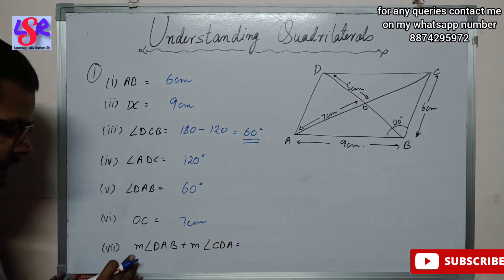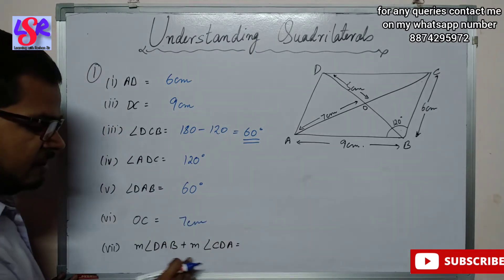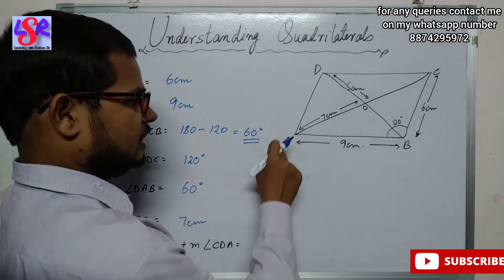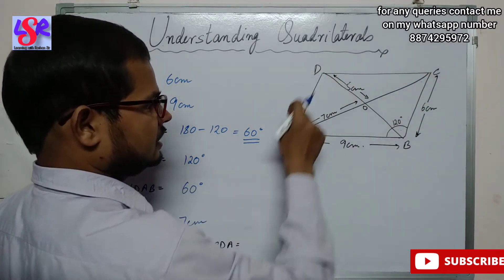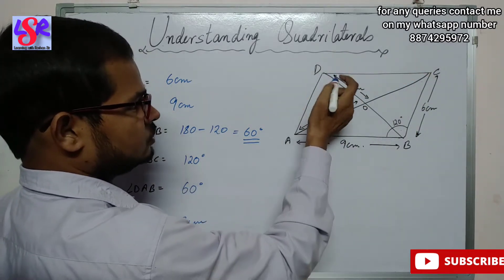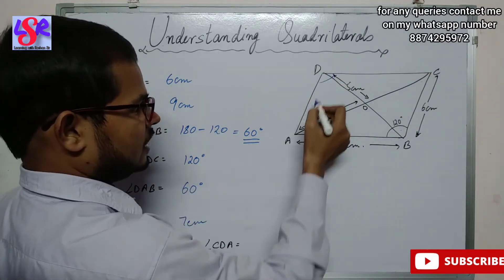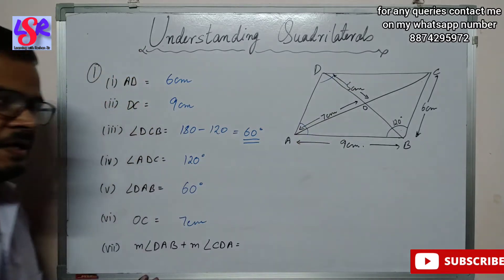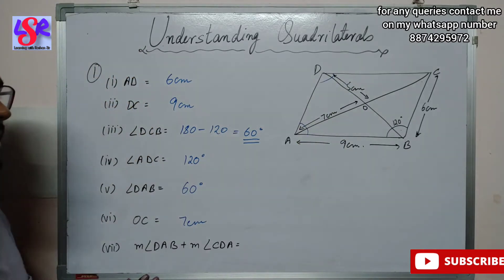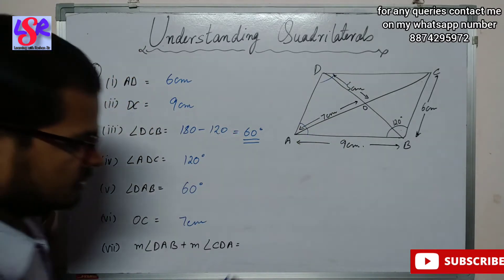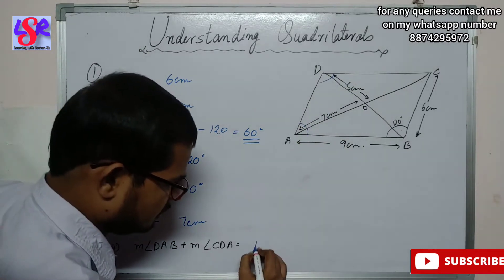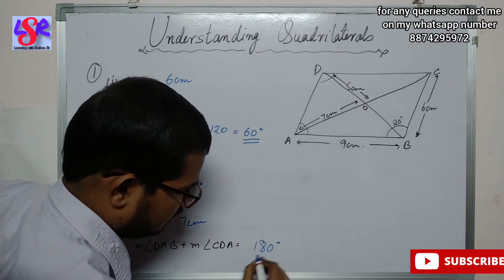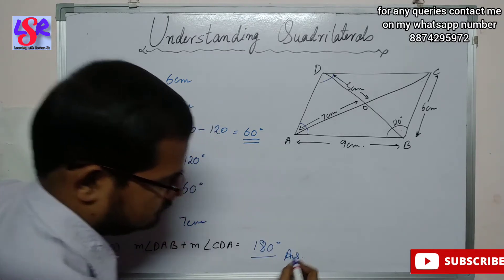Finally, angle DAB plus angle CDA: these two are adjacent angles of a parallelogram, so their sum is 180 degrees.